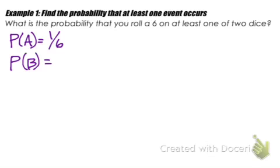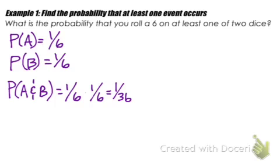For event B, same thing — if we want to roll a 6, it would be 1/6, because we want to roll at least a 6 on one of the dice. But there's also a probability that we roll both dice and get a 6 on both, which is the probability of A and B occurring. That's 1/6 times 1/6, which gives 1/36 — the chance of rolling snake eyes, specifically two 6s.